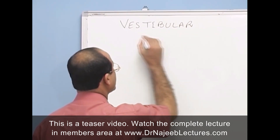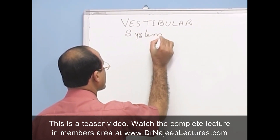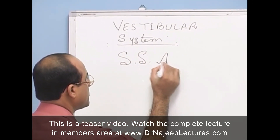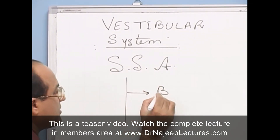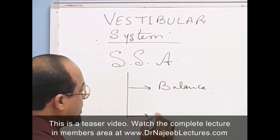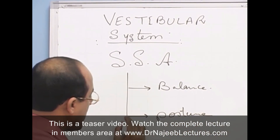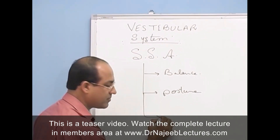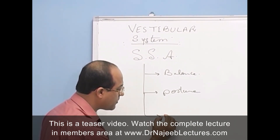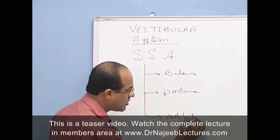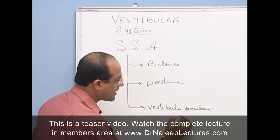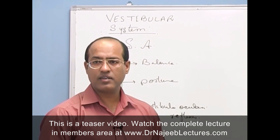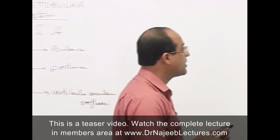The vestibular system is a special somatic afferent system concerned with balance, posture maintenance, and coordinating vestibulo-ocular reflexes. We are going to go into detail of the whole system, and first we'll see exactly where the vestibule is.